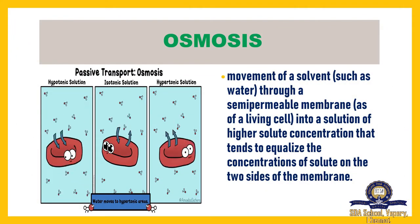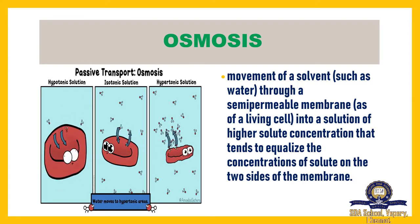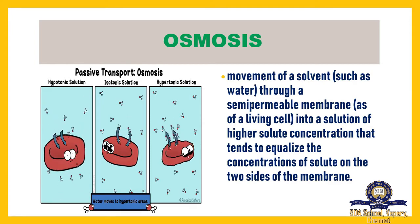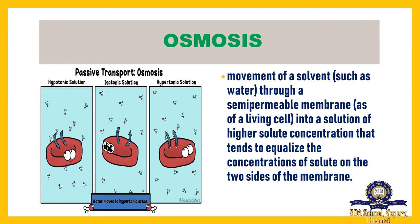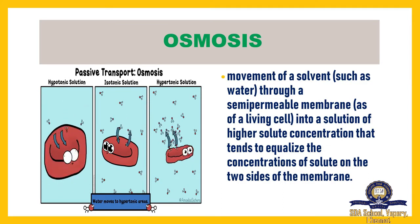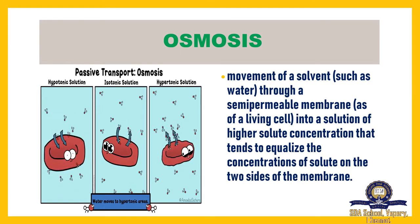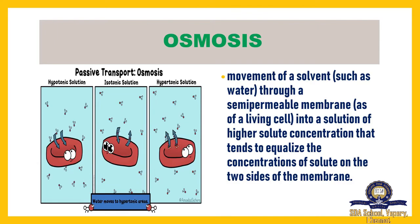Osmosis is the movement of a solvent across a semi-permeable membrane into a solution of higher solute concentration, which tends to equalize the concentration. For example, if one side of a food item has a high salt level and the other side has less, you can stir it so all parts get the same amount — the taste becomes equal. Likewise, in osmosis, the body maintains the concentration of minerals in the blood, including blood sugar levels.